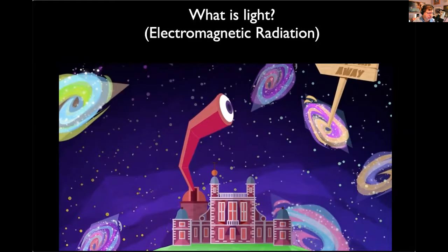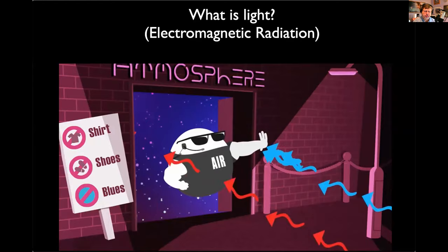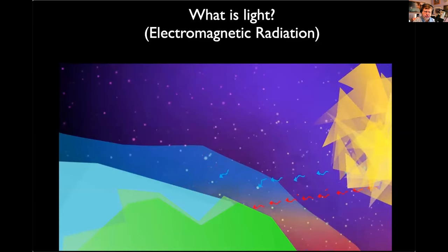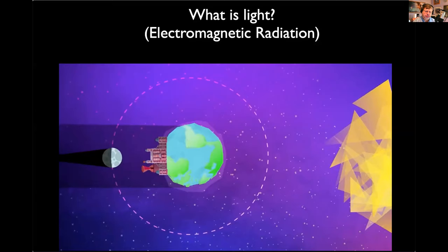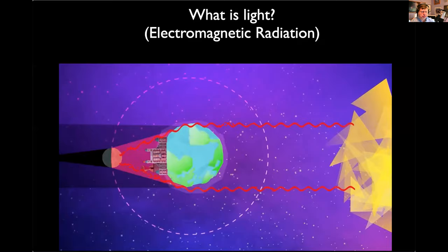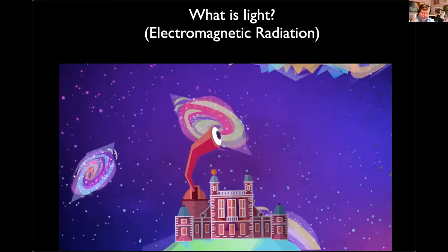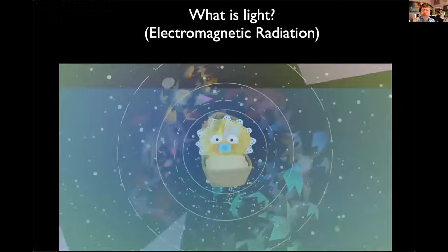We can see matter interact with light and change it. The gases in the Earth's atmosphere scatter blue wavelengths of sunlight, giving us blue skies during the day and red skies at sunrise and sunset. We can watch sunlight reflect off planets and the Moon. During a lunar eclipse, red sunlight changes direction as it passes through the Earth's atmosphere and reaches the Moon. Visible light from stars can be absorbed by dust in space, but we can detect infrared light to see baby stars hiding in nebulae.